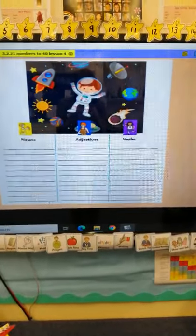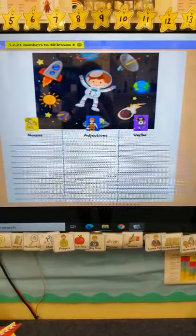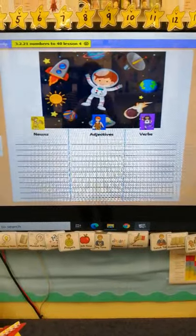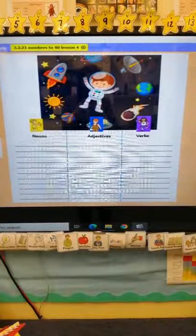And finally, our final column here is verbs. What's a verb? Slightly trickier. You're right, it's a doing word. It's a Simon Says word, isn't it?